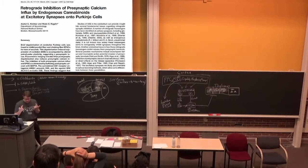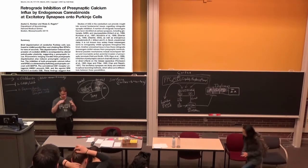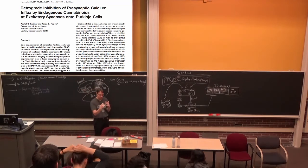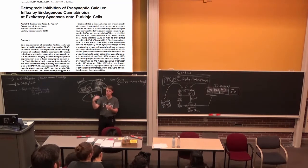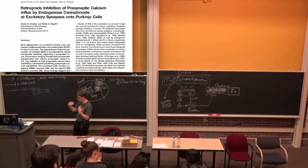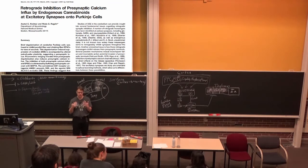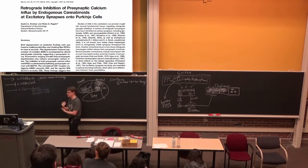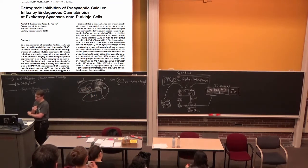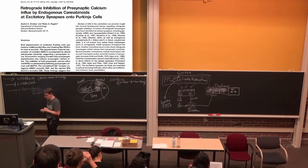Cannabinoid receptors are sometimes involved in long-term depression as well as the short-term suppression of inhibition. In addition, cannabinoid receptors are sometimes found on presynaptic terminals of glutamate-releasing neurons, so when cannabinoids are released you can get suppression of excitation as well. That particular point won't be on the final, but it illustrates the idea that biology finds a solution and uses it over and over in a variety of different contexts.